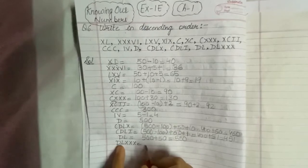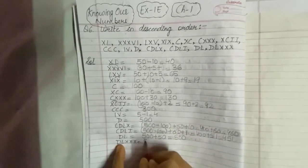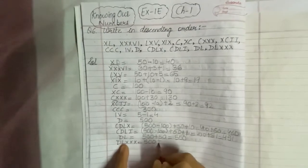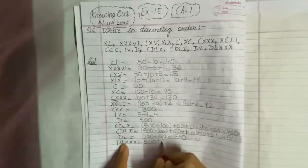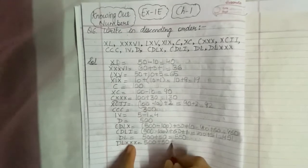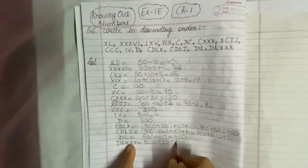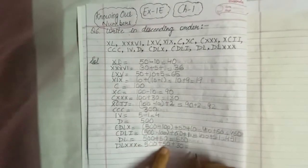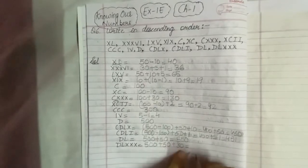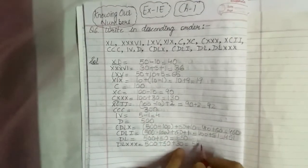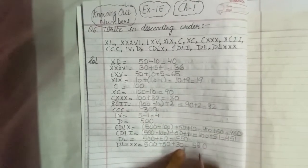Next is DLXXX. D stands for 500, L stands for 50, and triple X means 30. So 500 plus 50 plus 30 gives us 580.